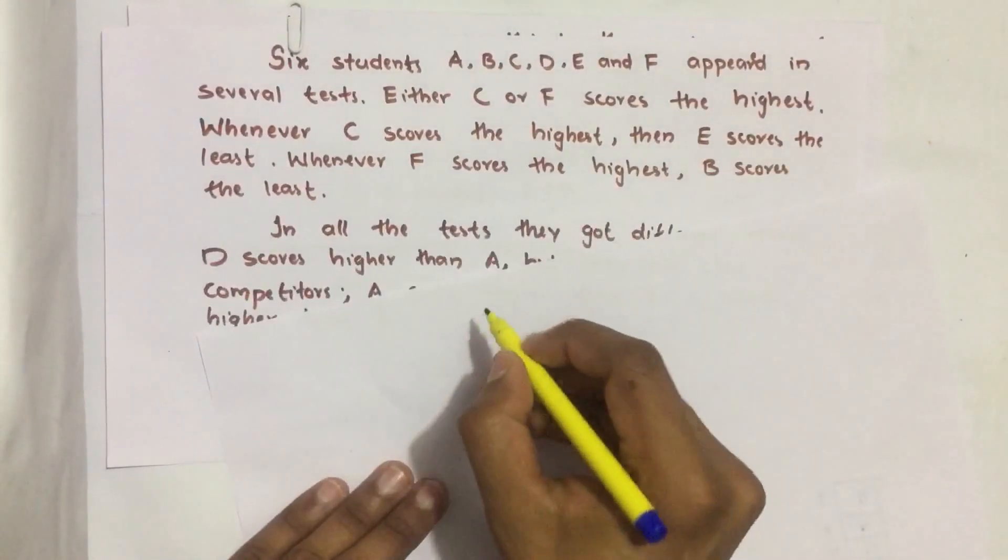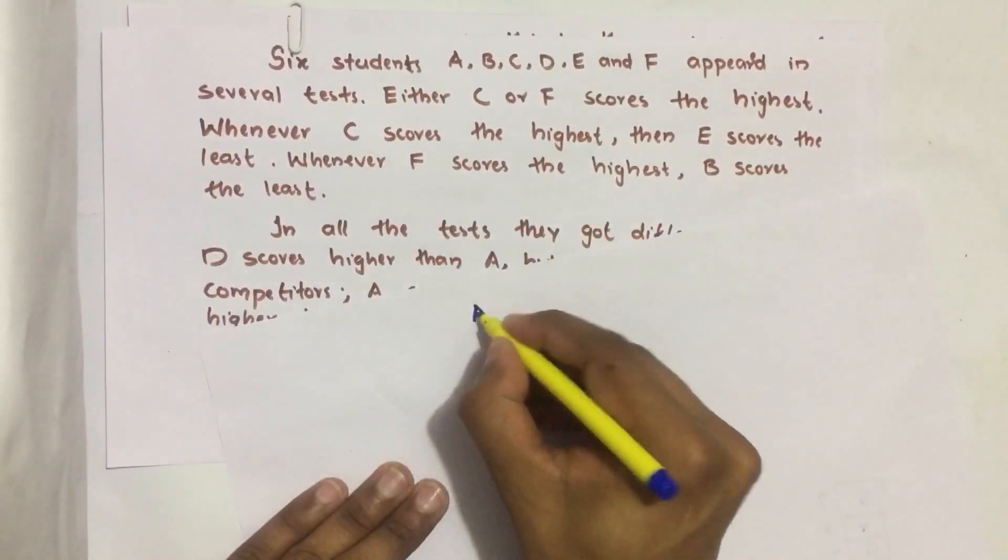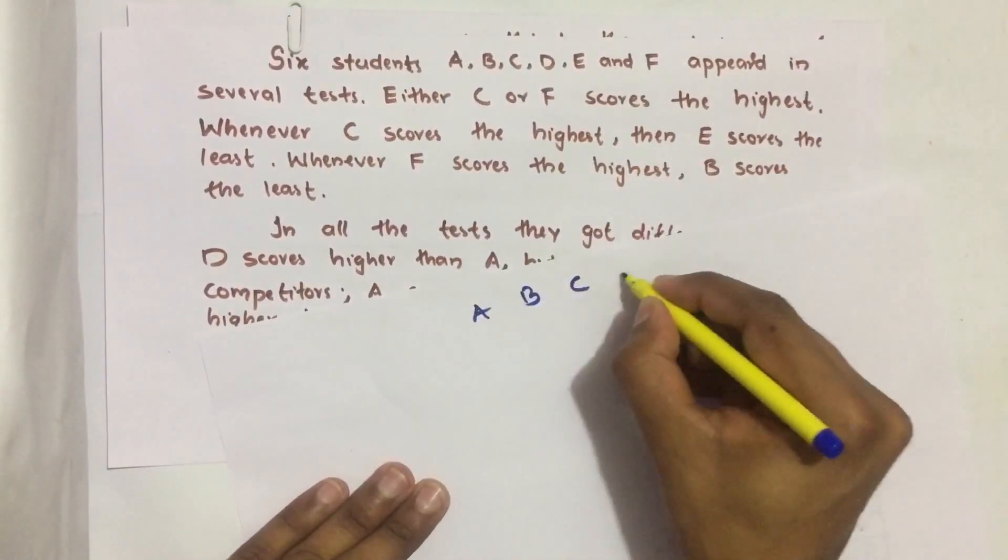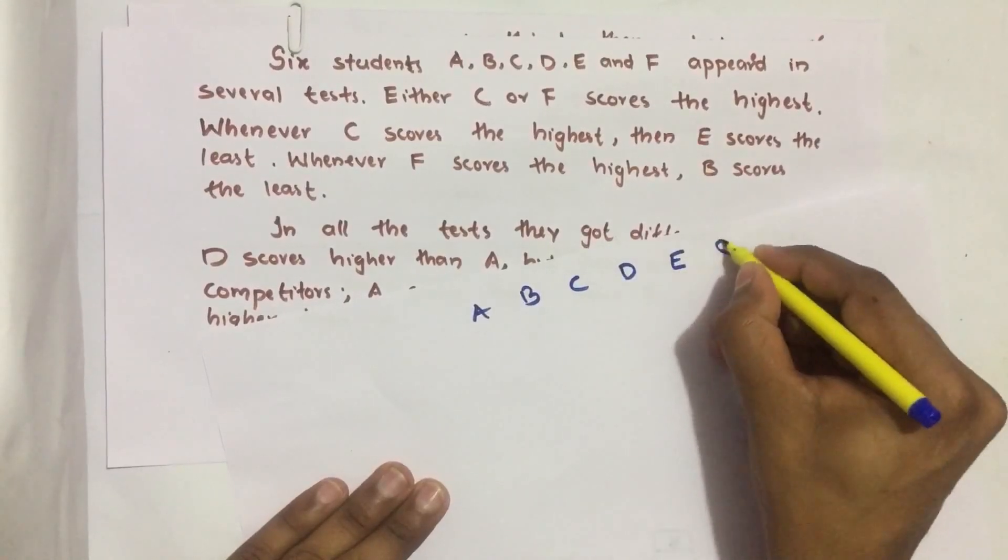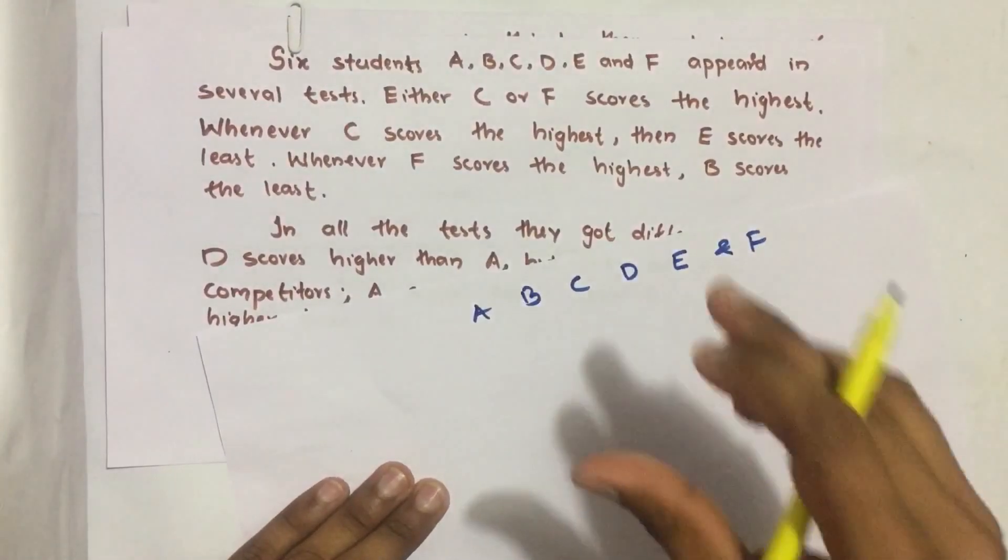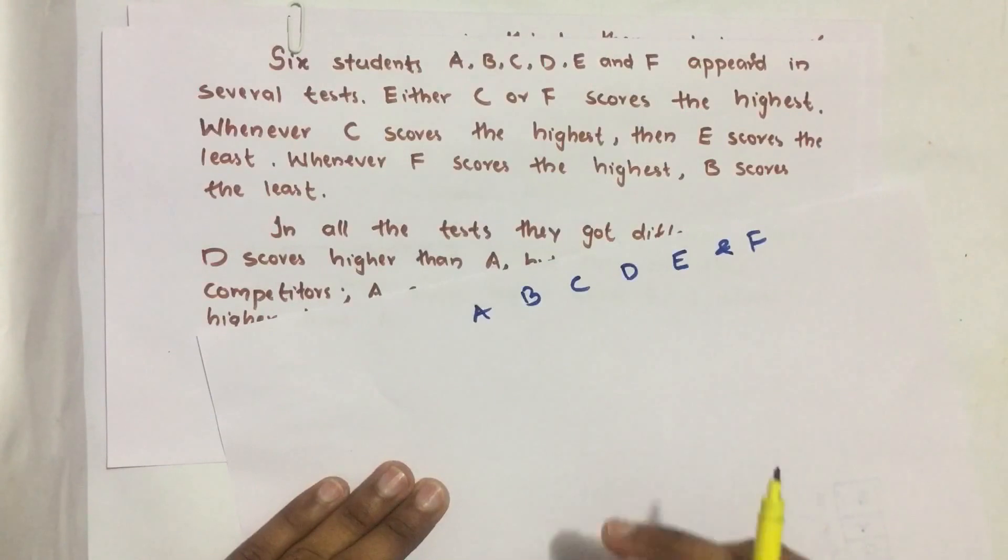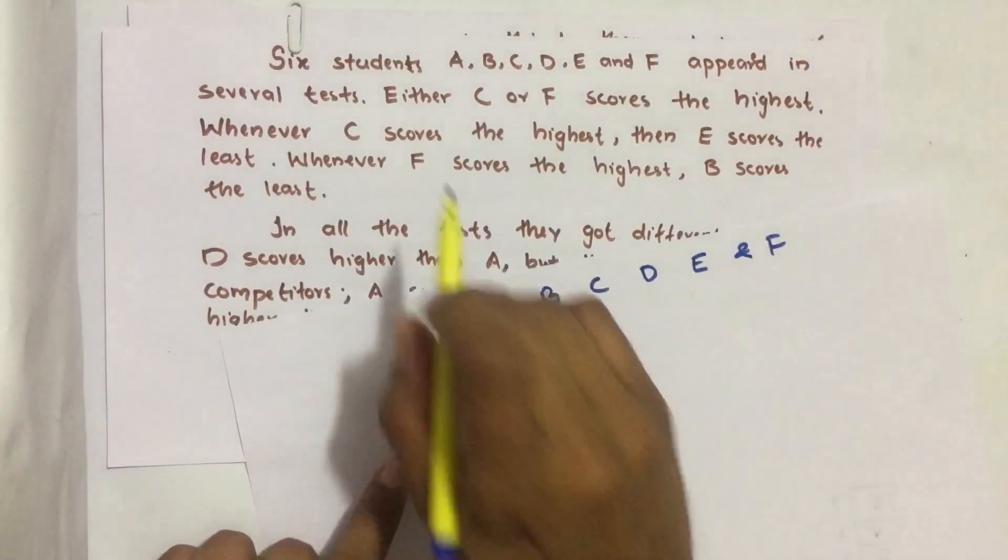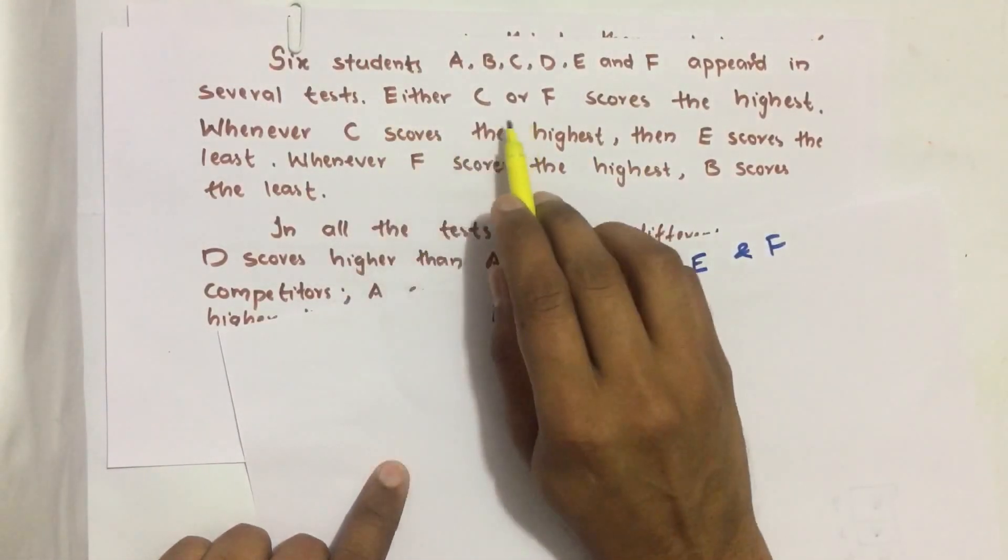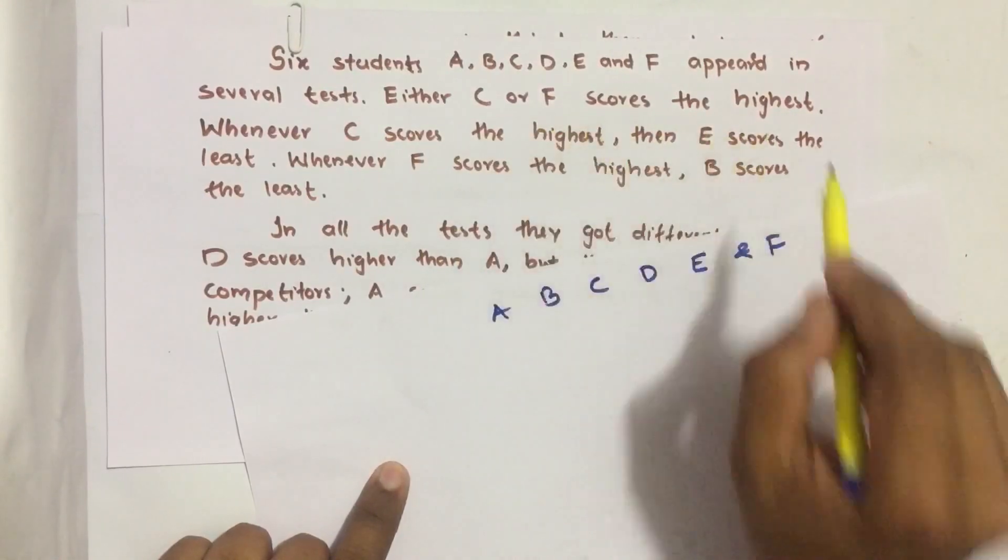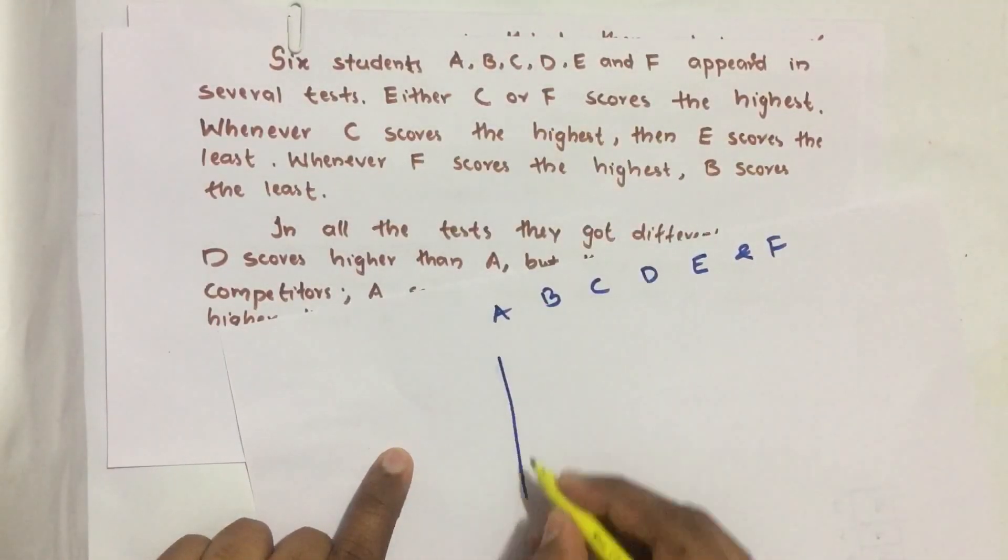So here there are six students A, B, C, D, E and F. They are ranked based on their scores and in the first statement it is said that C or F scores the highest. Always when they rank.